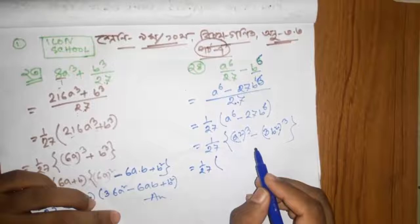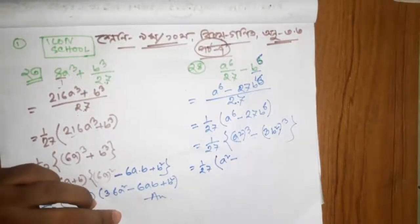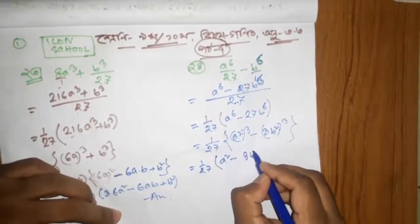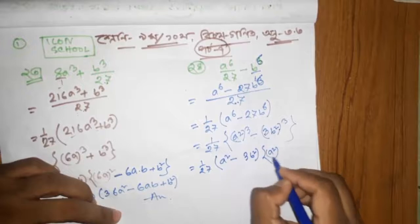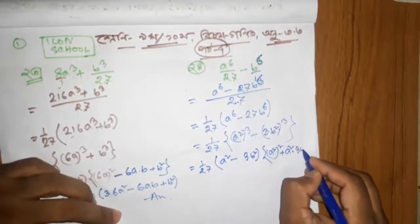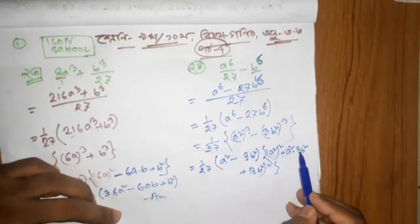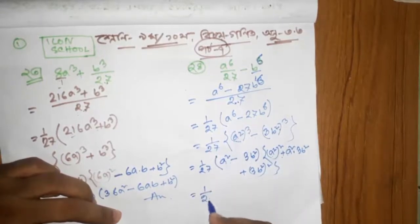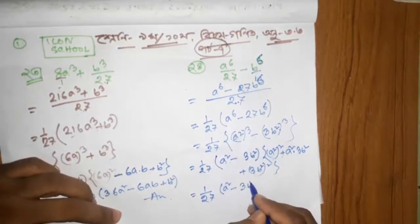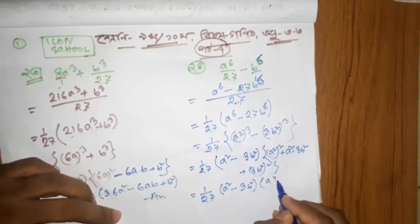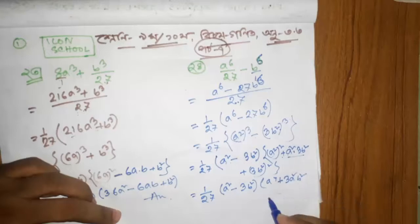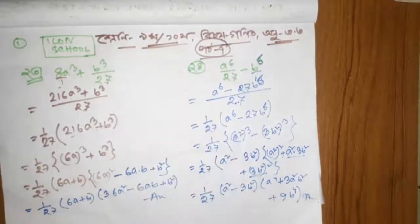a cube minus b cube: a minus b into a square plus ab plus b square. a minus b into a square plus ab plus b square. a minus b into a square plus ab plus b square. Then 1 by 27, a square minus b square, a to the power 4, a to the power 4.